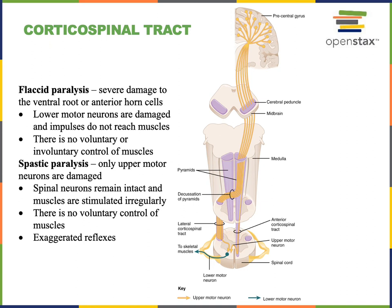In contrast, spastic paralysis results from damage to the upper motor neurons, while the lower motor neurons are still functioning. Therefore, muscle tone will still be present in the muscles innervated by the intact lower motor neurons. However, without commands coming from the upper motor neuron, there is no voluntary control over the muscles. Because the lower motor neuron is still functioning, there will be muscle tone and simple reflexes will still be present — in fact, those reflexes will be exaggerated or stronger than normal.